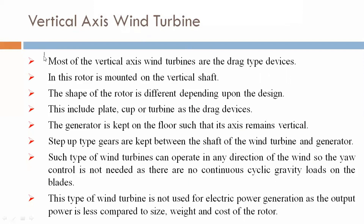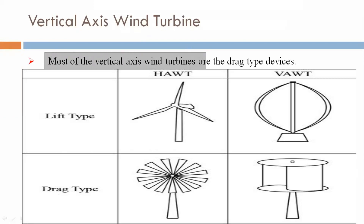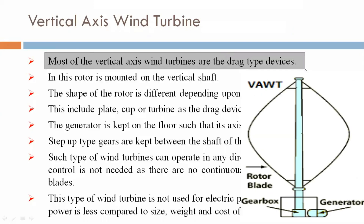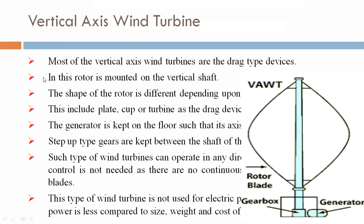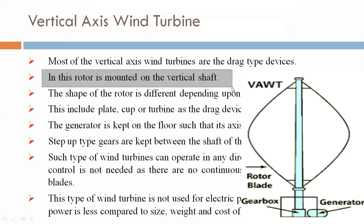Most of the vertical axis wind turbines are drag-type devices. In vertical axis wind turbines, drag-type devices are used. In this, the rotor is mounted on the vertical shaft.